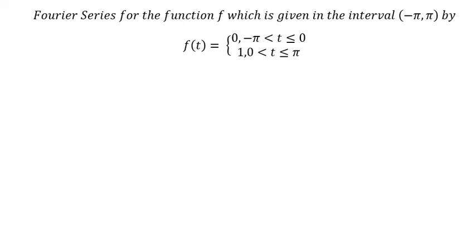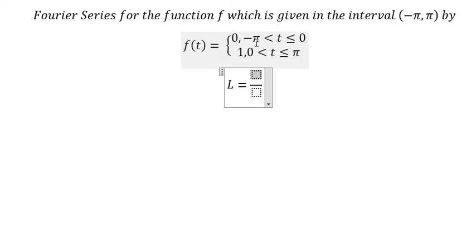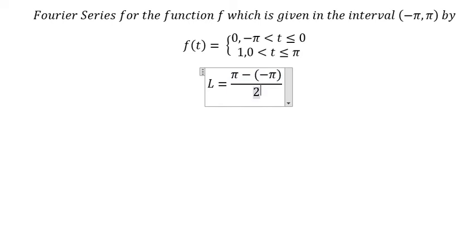Hello everybody. Today I will talk about calculus — the topic is about Fourier series. First, we need to find capital L. The interval is from negative b to b, so we have b minus negative b over two, which gives us L equals b.